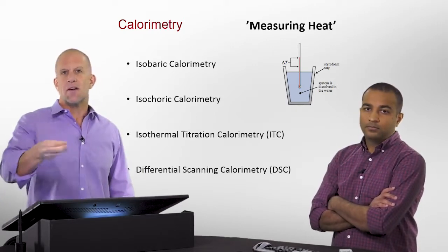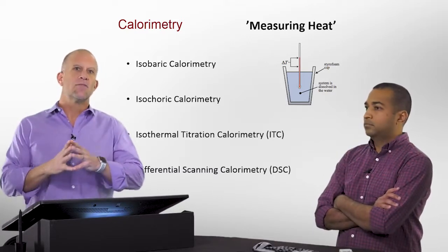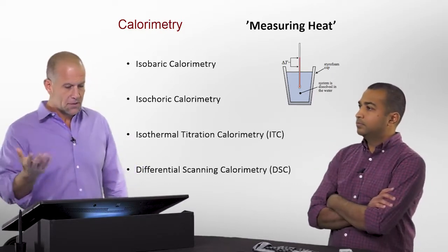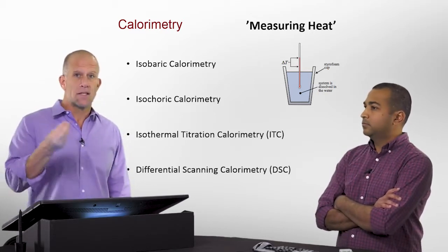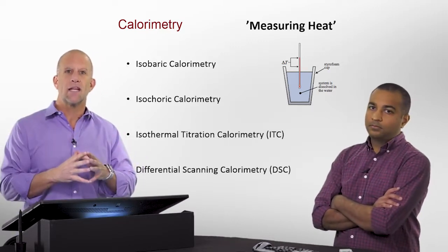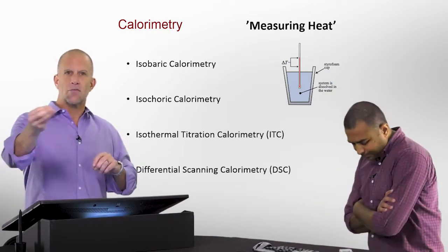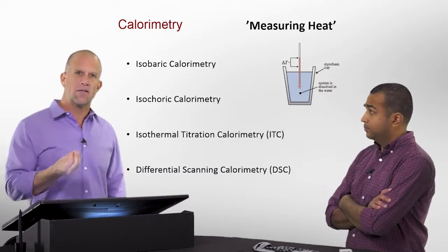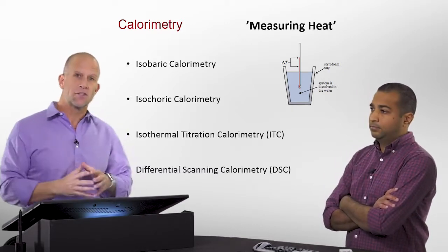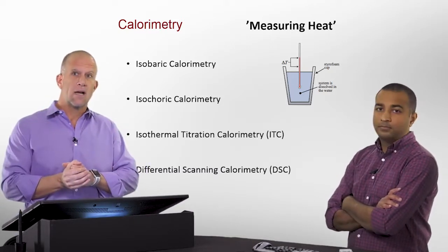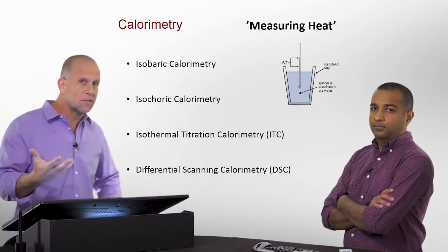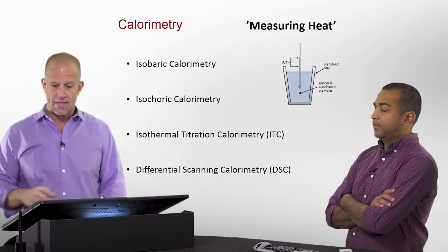We're going to look at four major types of calorimeters — the ones most commonly seen in chemistry or biochemistry. We'll touch on isobaric (constant pressure) and isochoric (constant volume) calorimeters, which get introduced fairly early. Then we'll look at two major types used in biochemistry and chemistry: isothermal titration calorimetry (ITC) and differential scanning calorimetry (DSC), which gets used more often than almost any other type.